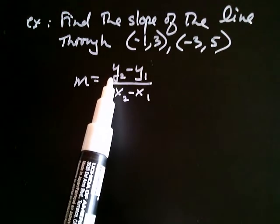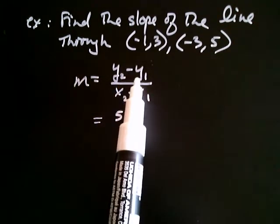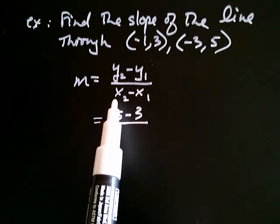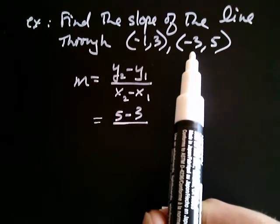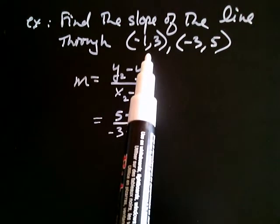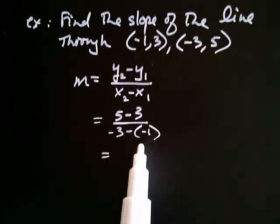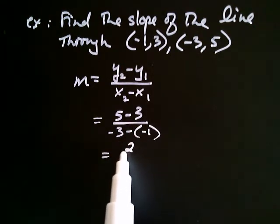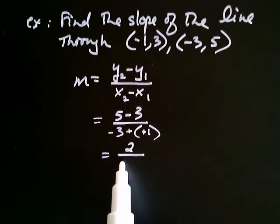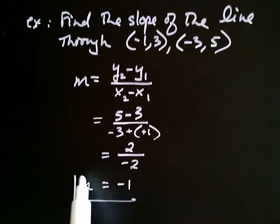With that decision I follow the formula. The y coordinate of the second point is five, take away the y coordinate of the first point, which is three. In the denominator: x coordinate of the second point is negative three, take away the x coordinate of the first point, negative one. Notice I needed parentheses since I'm taking away a negative. Five take away three is two, over negative three minus negative one — remember when you subtract a negative, that changes to addition — so it's negative three plus one, which is negative two. Two divided by negative two equals negative one. So the slope is negative one.